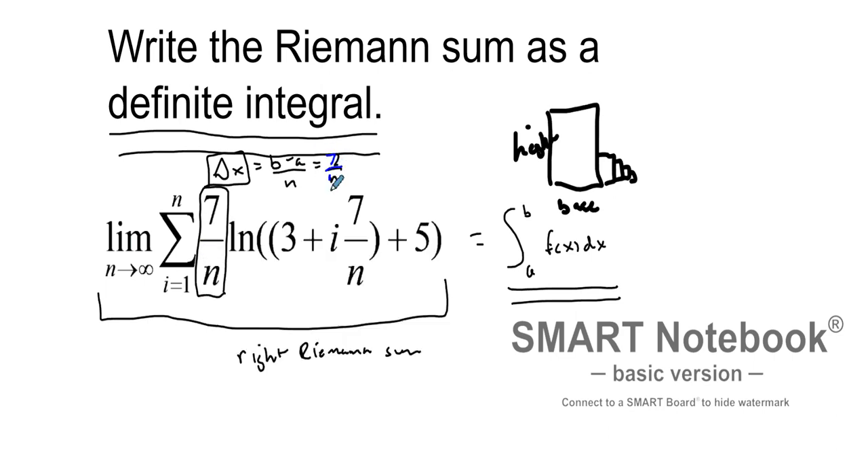If you see the 7 over n, that is going to be our delta x. So delta x equals 7 over n. We can also identify different things because a right Riemann sum...